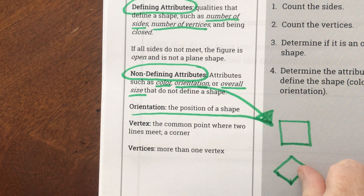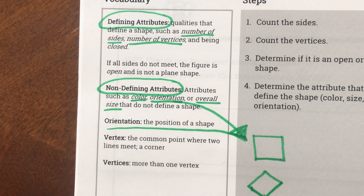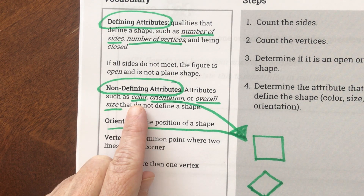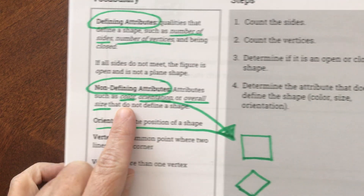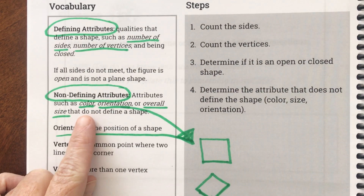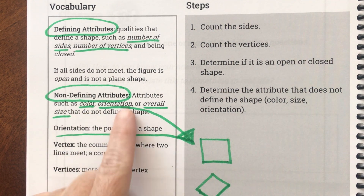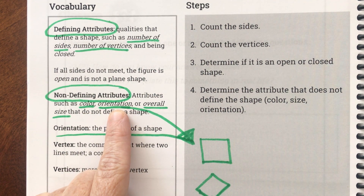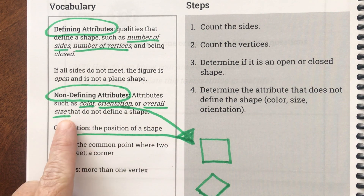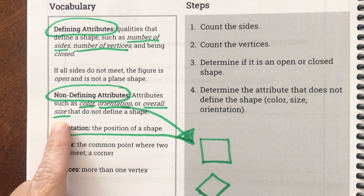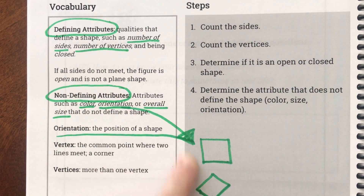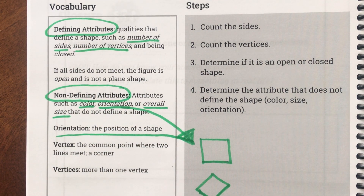I can move and turn the shape, but those things don't tell us what shape it is. If I told you the shape is yellow, would you be able to know what shape I'm talking about? No — that's not going to help you define the shape. What if I said the shape is sideways? Nope, that doesn't help. What if I said the size is really little? Do we see why those are called non-defining? Because they don't help us decide what the shape is.